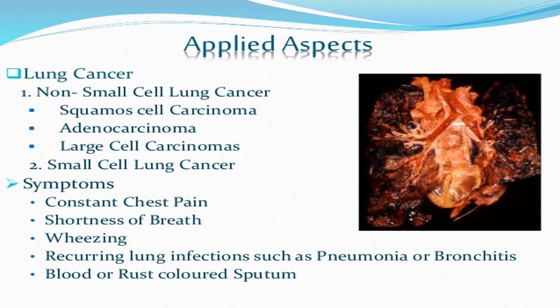Disorders of the respiratory system: the first severely affected disease is lung cancer, involving uncontrolled division of cells. It may present as carcinoma, adenocarcinoma, large cell carcinoma, or small cell lung cancer. Symptoms include constant chest pain, shortness of breath, wheezing, continuous lung infections like pneumonia or bronchitis, and blood or rust-colored sputum.